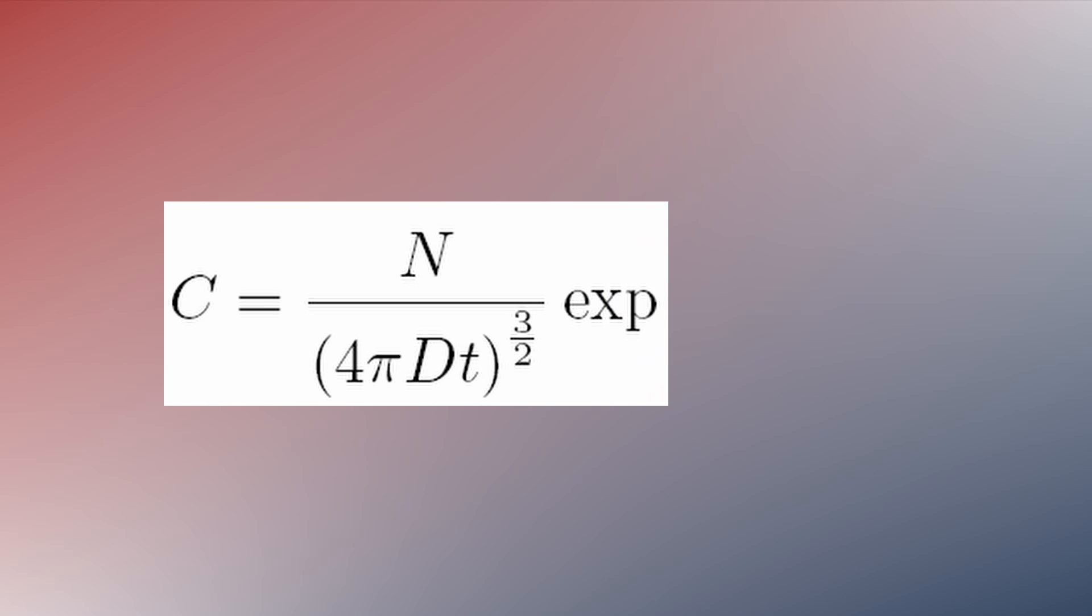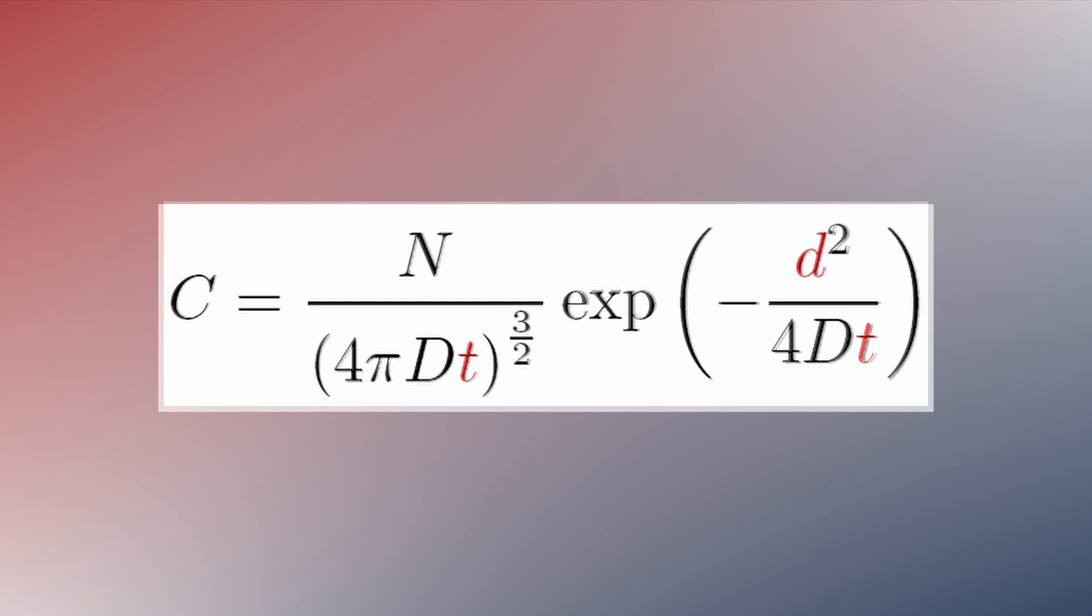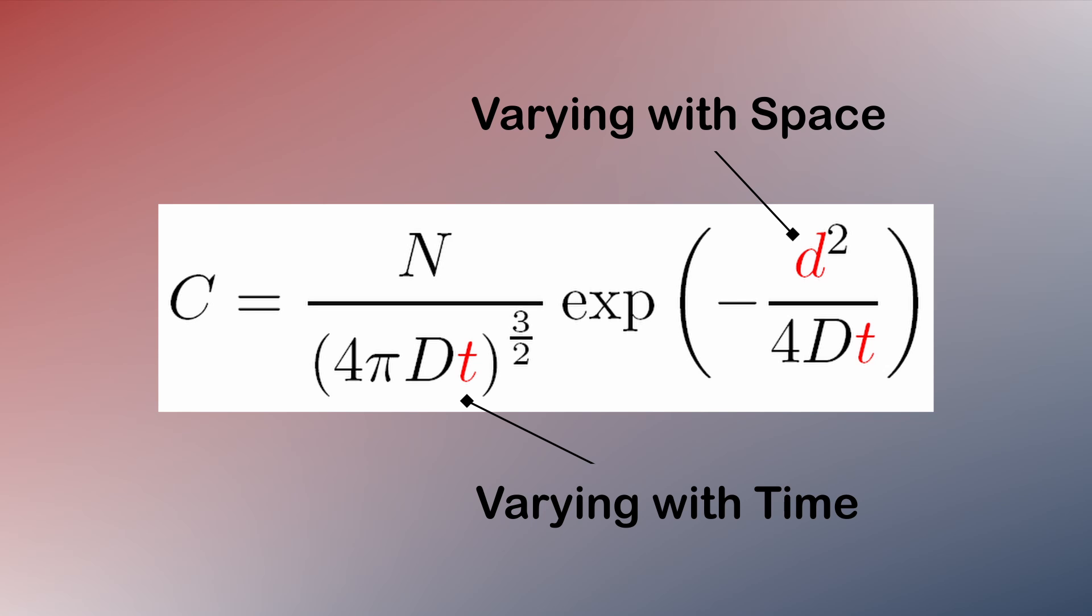And this is all multiplied by an exponential term that includes the distance of the observer from the transmitter, the diffusion coefficient, and the time elapsed. This is an equation that varies over both time and space. It describes how diffusion waves spread out after molecules are created at a point.